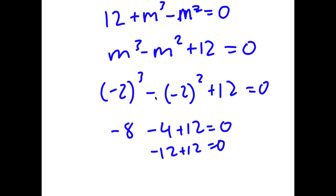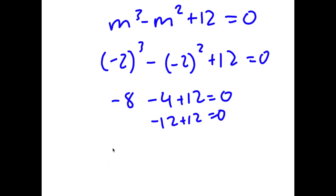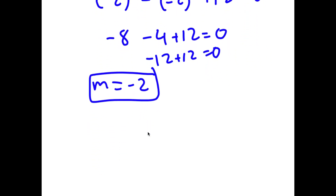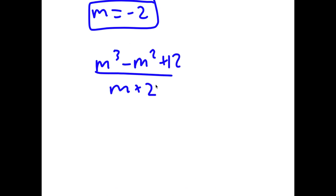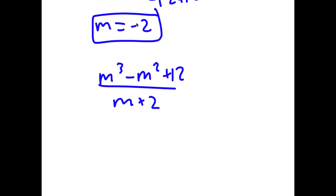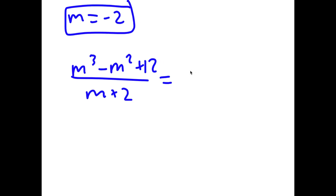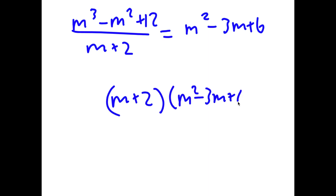Now that I know that negative 2 is a solution, I can use this to find the rest of the solutions by dividing my equation m to the power of 3 minus m squared plus 12 by m plus 2, because m plus 2 is the same thing as saying m equals negative 2 is a solution. So this gives m squared minus 3m plus 6.